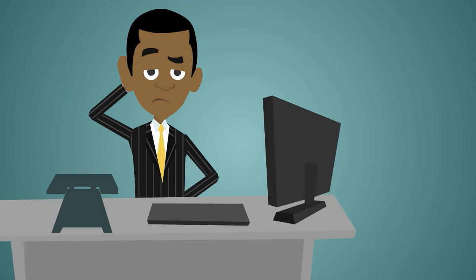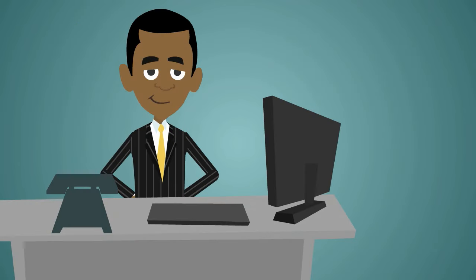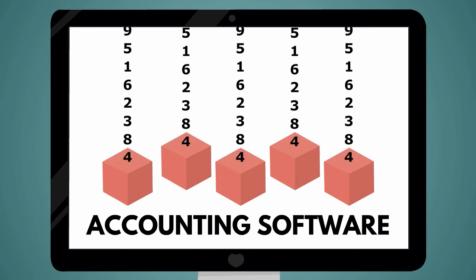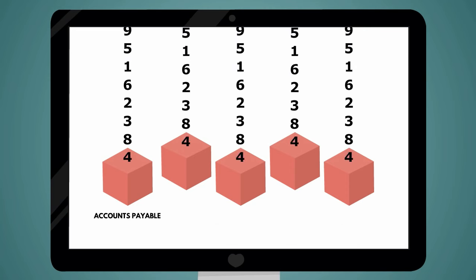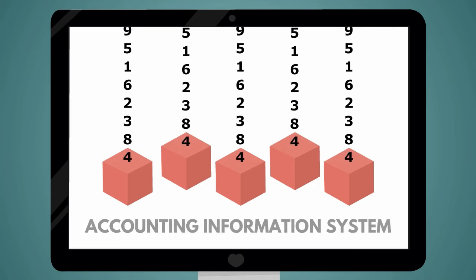Still have questions? No worries. Here's a more in-depth definition for you. Accounting software describes a type of application software that records and processes accounting transactions. It does this within modules such as accounts payable, accounts receivable, payroll, and more. It functions as an accounting information system — information and data goes in, so information and data can come out again.